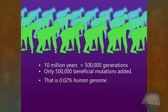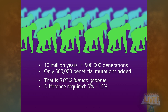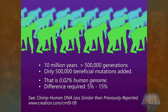Even the old myth of a 1–2% difference between human and chimp DNA wouldn't work under this scenario. But we know the difference is actually at least 5%, or as much as 15%. We did an entire episode on this subject titled "Chimp to Human DNA: Less Similar Than Previously Reported."